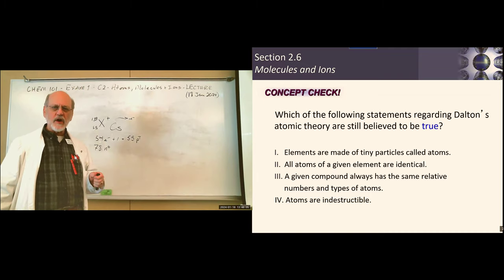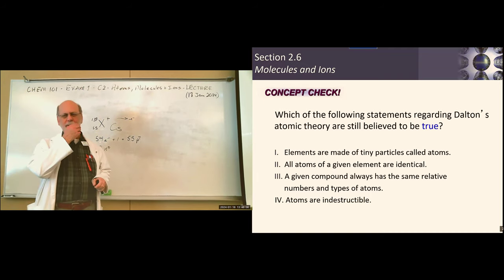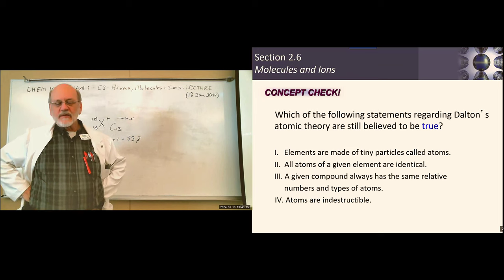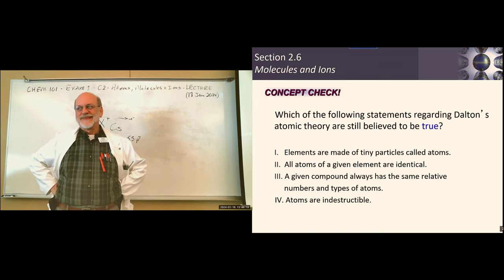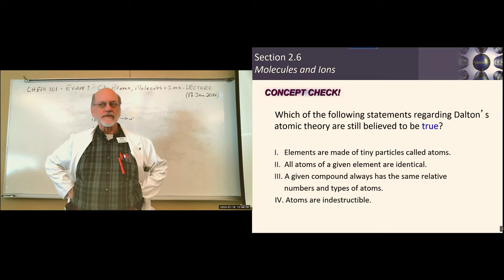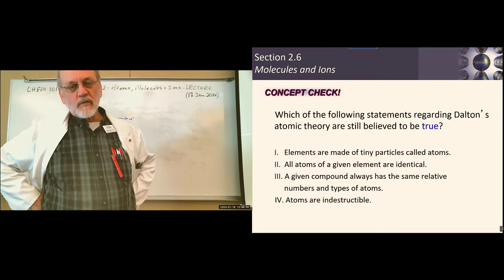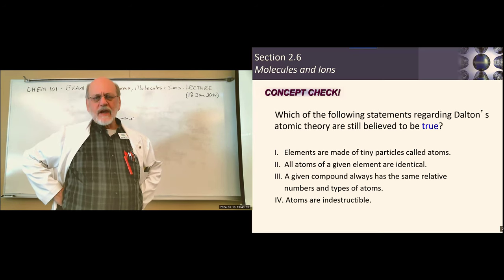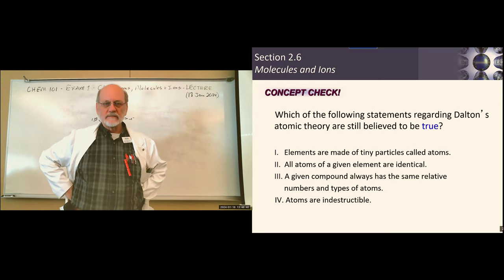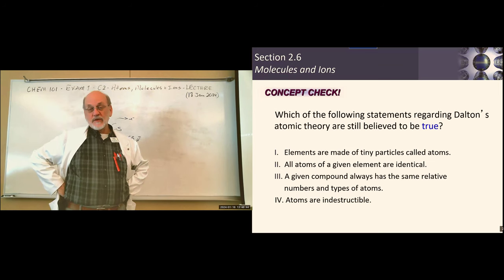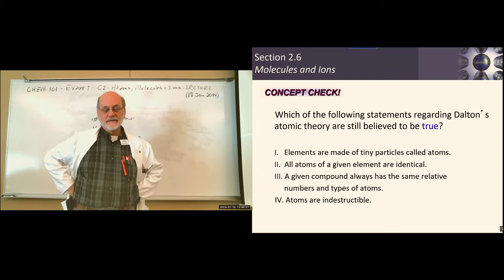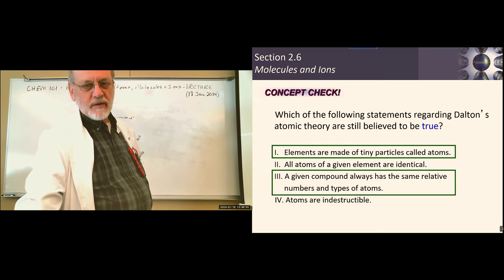Which of Dalton's atomic theory statements are still believed to be true? (1) 'Elements are made of tiny particles called atoms' — yes, still holds. (2) 'All atoms of a given element are identical' — false, because of isotopes; even chemically there are slight differences. (3) 'A given compound always has the same relative number and types of atoms' — still true. (4) 'Atoms are indestructible' — false; the cathode ray tube demonstrates we can extract electrons from atoms. So only statements 1 and 3 remain true.